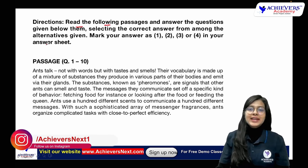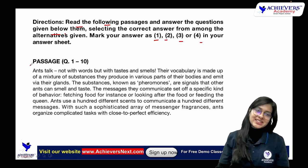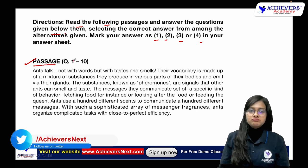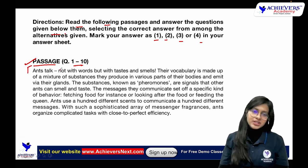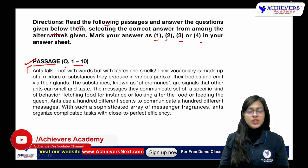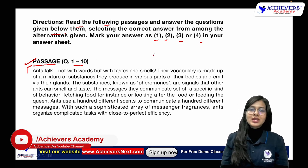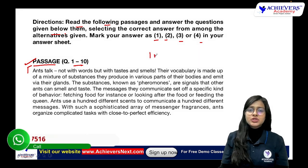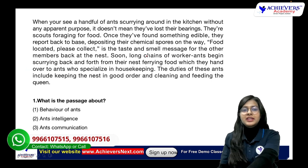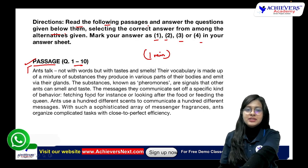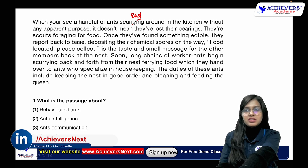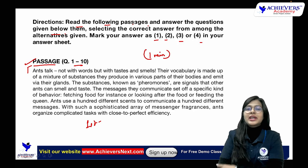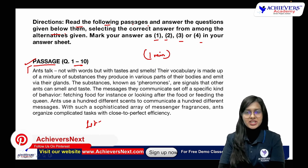Read the following passage and answer the questions given below. You have four options in your answer sheet. In the first passage you have 10 questions, and the passage is at a very easy level. First I'll give you a chance to solve the questions on your own, and then I'll discuss them with you. You have one minute to read the whole reading comprehension. Just start reading the passage — no need to waste time reading the questions first. Your time starts now.